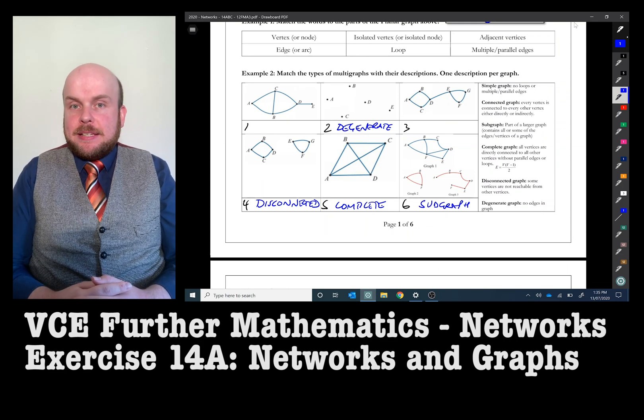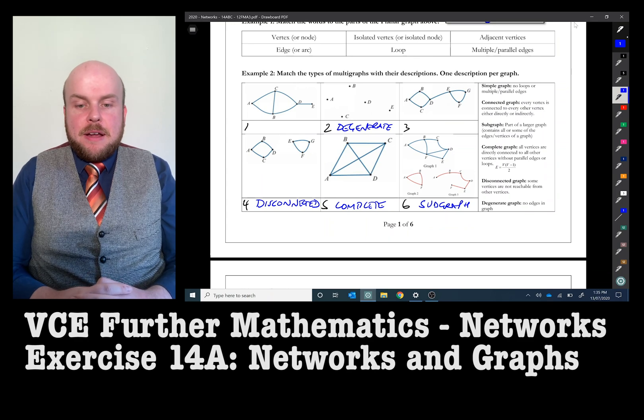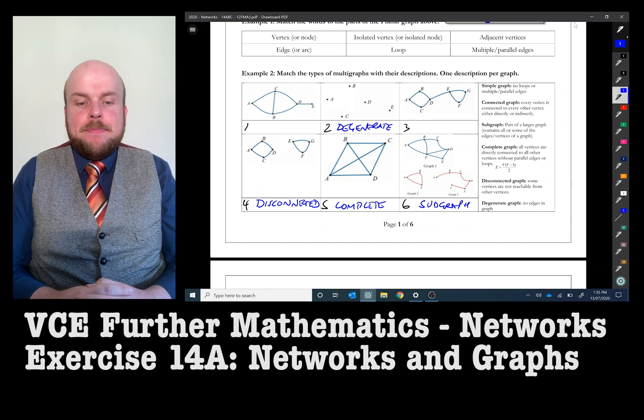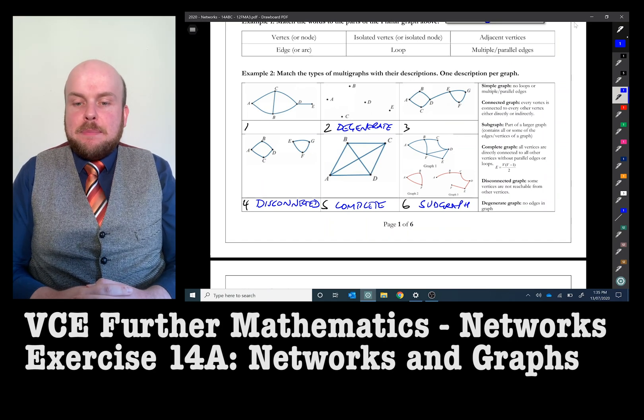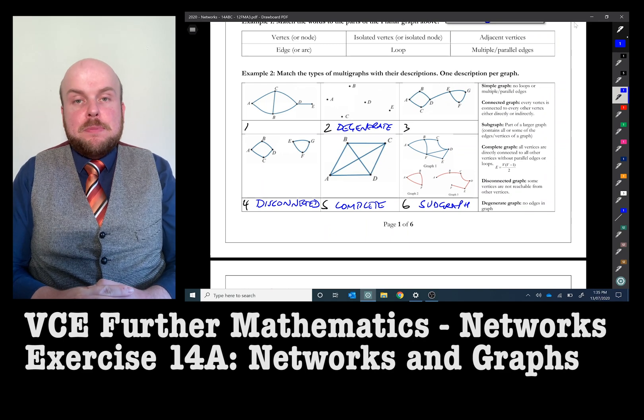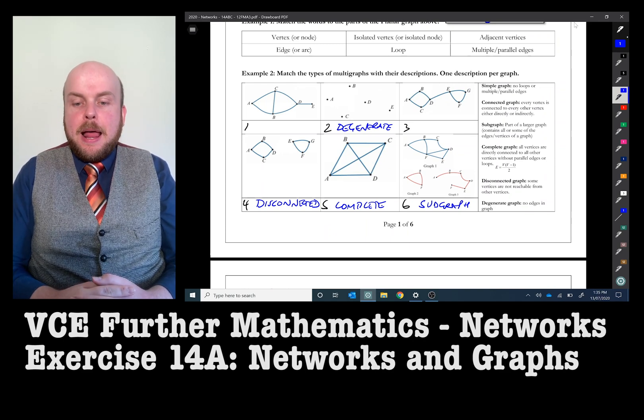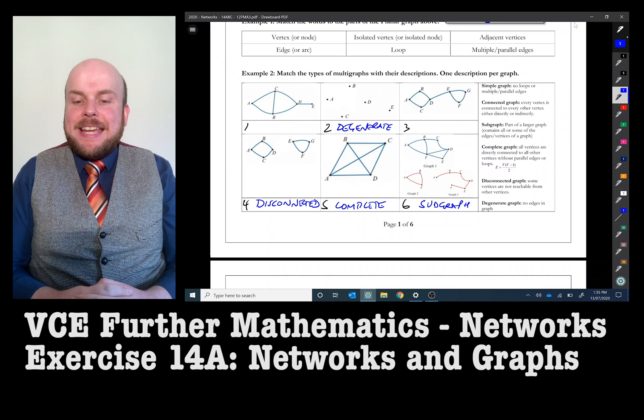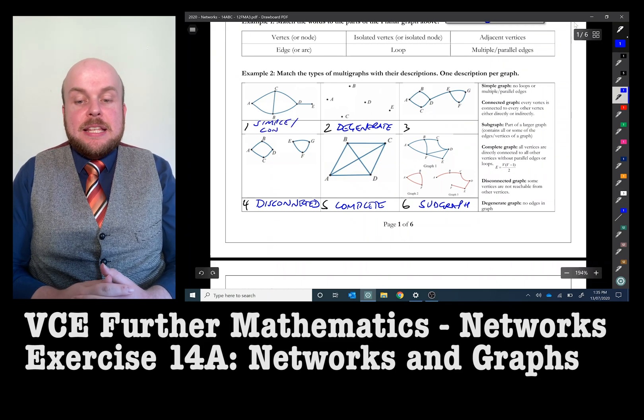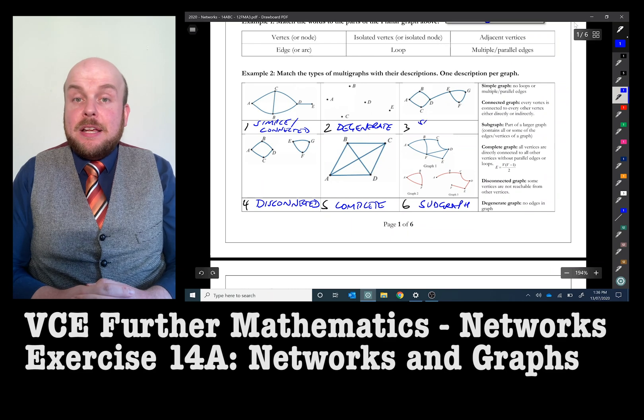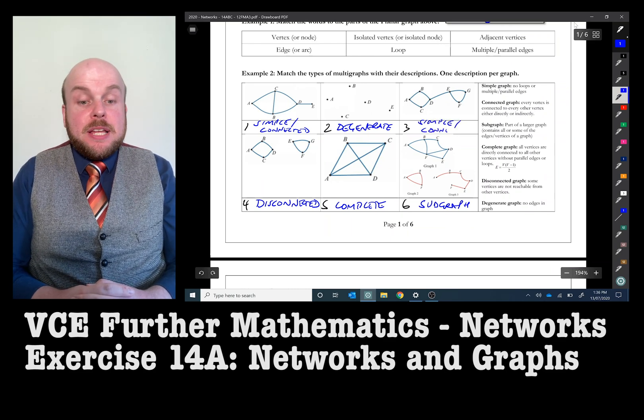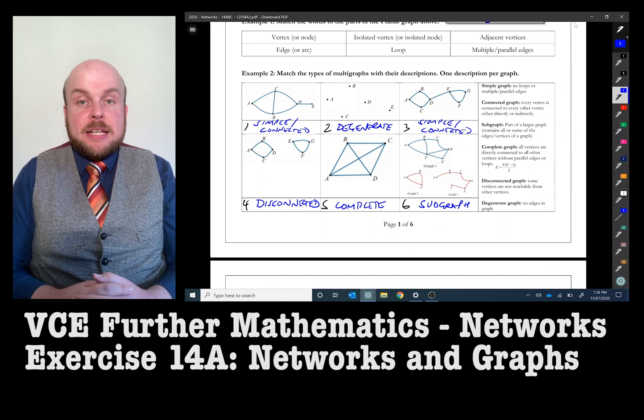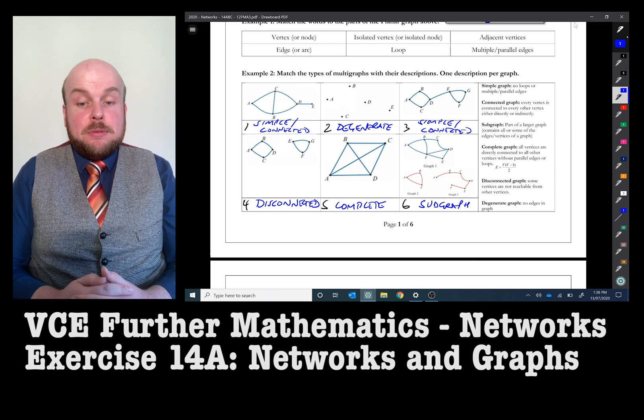The last two graphs that we need to discuss here are simple graphs and connected graphs. Examples one and three are actually examples of both. In example one, this will be an example of a simple graph because it has no loops or multiple or parallel edges, and it is also a connected graph, not to be confused with a complete graph. A connected graph is where every vertex is either connected to every other vertex, either directly or indirectly. Because they are indirectly connected but all of the vertices are in some way connected together, it is considered to be connected, but it's also simple.